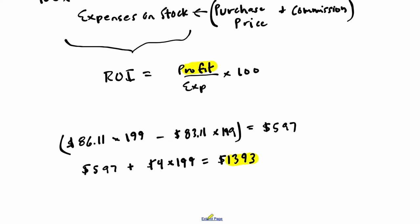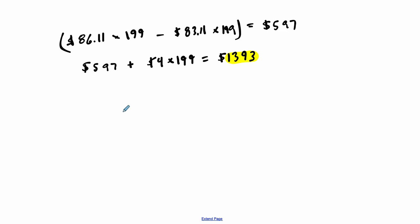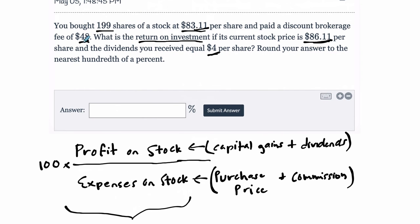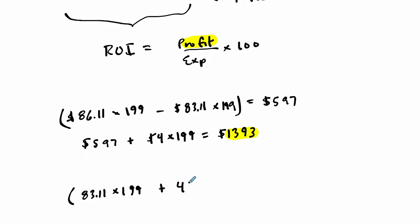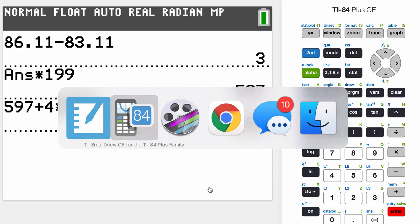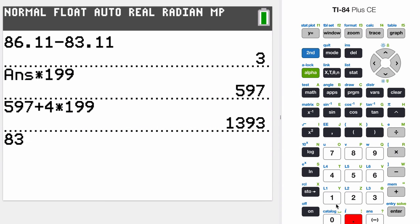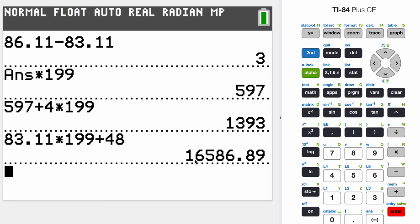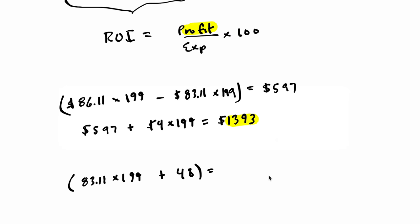Now we want to find our expenses. So we had to buy this stock and that would have cost us money. So in this case, it was $83.11 times 199 shares, plus that brokerage fee of $48 here. So plus $48. And this will be our total expense. So let's figure that out. $83.11 times 199 shares, plus $48 is $16,586.89. Let me take a screenshot in case I forget that. So this is all the money we spent to get this stock.